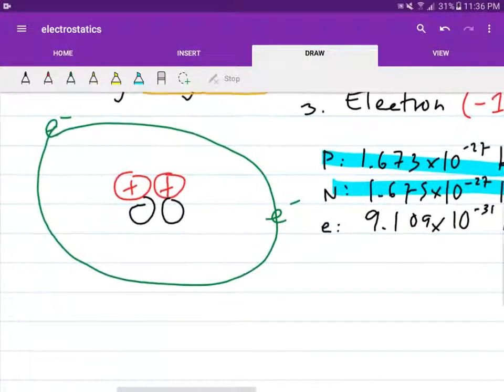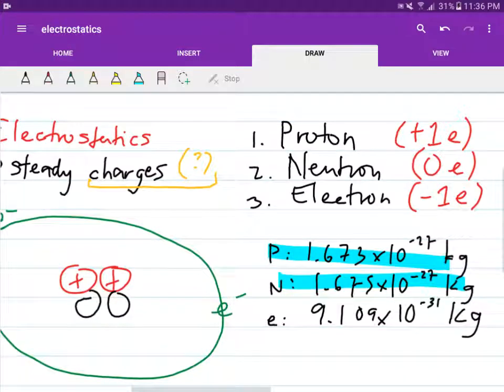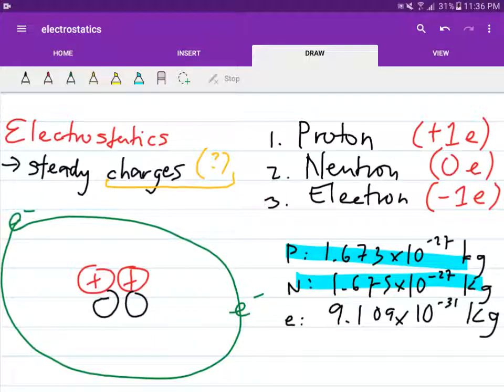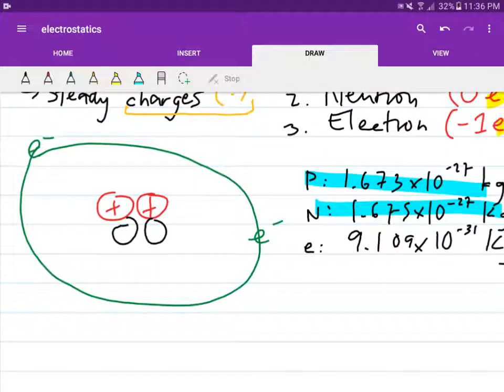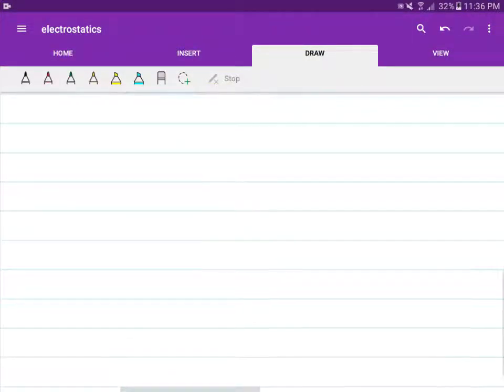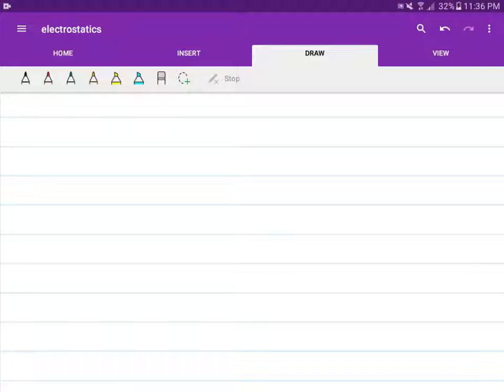So these two subatomic particles are much heavier compared to electrons. So now that we have seen the properties of subatomic particles like the proton, neutron, and electron, let's try to ask what is this constant e.